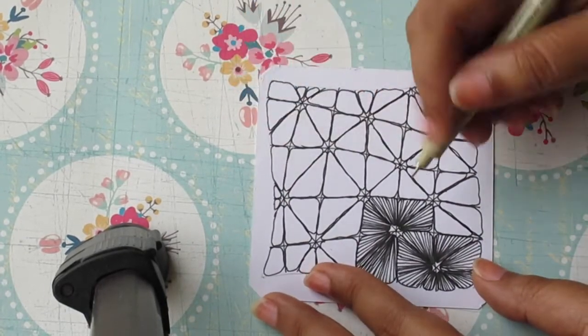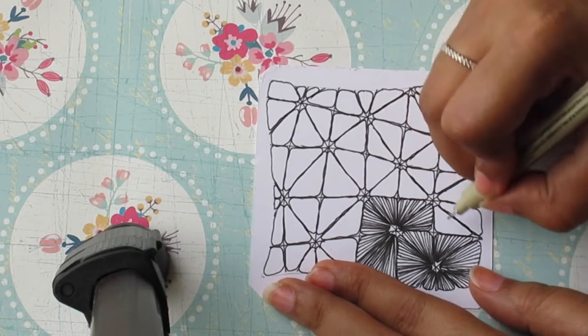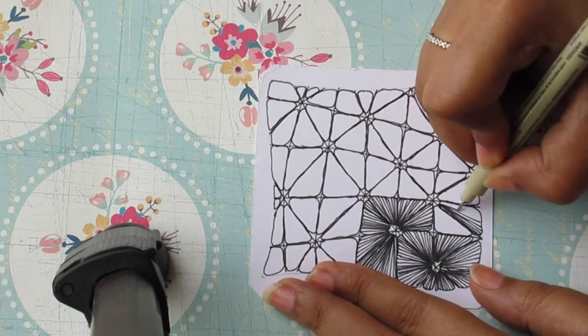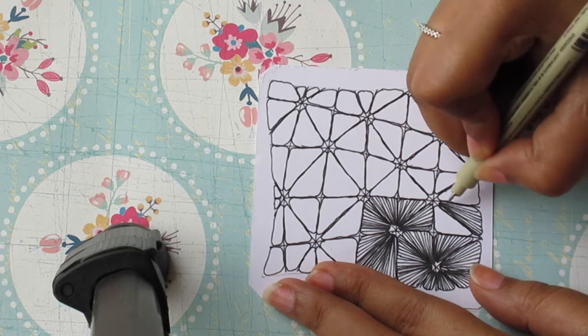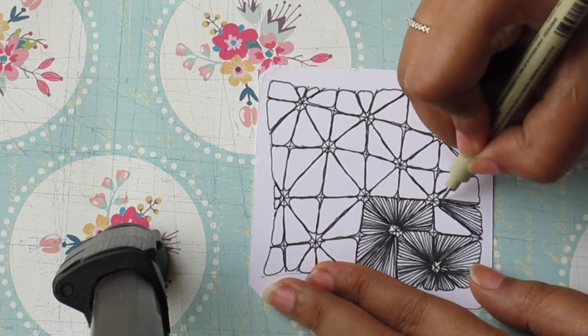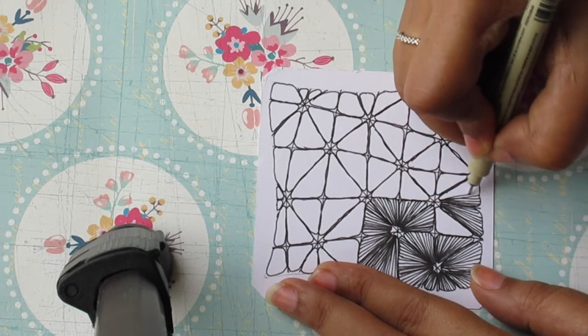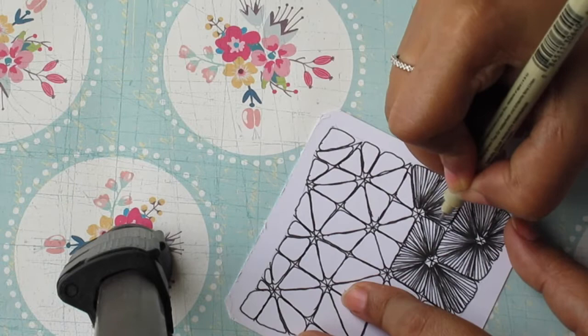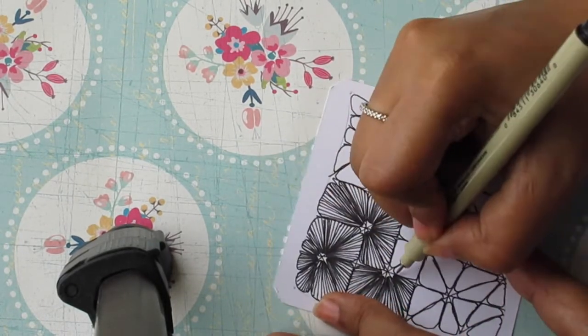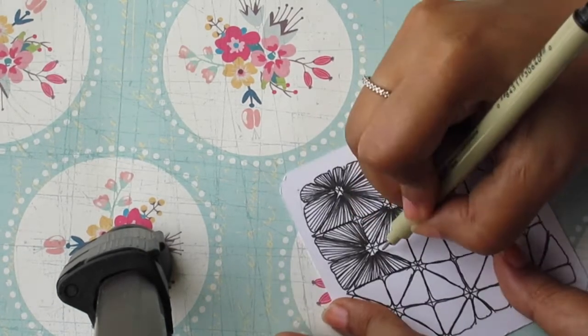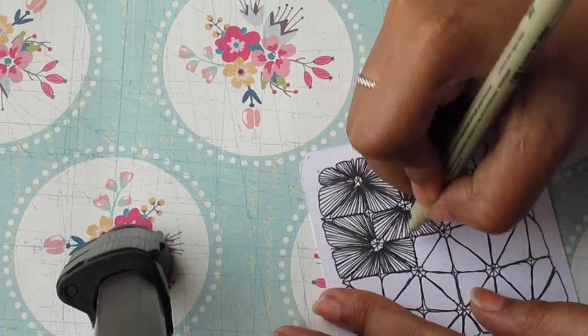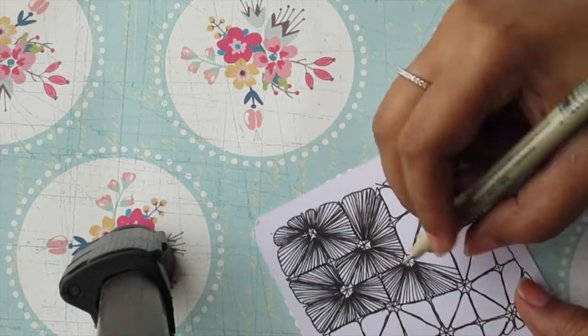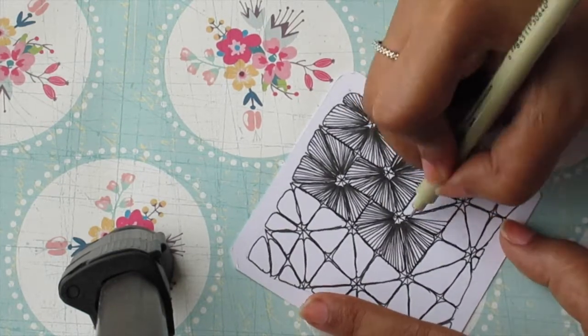Now again there is a circle at the edge of the second flower and there are triangles around it. So start making rays for these remaining triangles which are there around the circle. And now this will be repeated across the tile where we will keep making rays emerging from the circle and keep filling all the triangles around it.